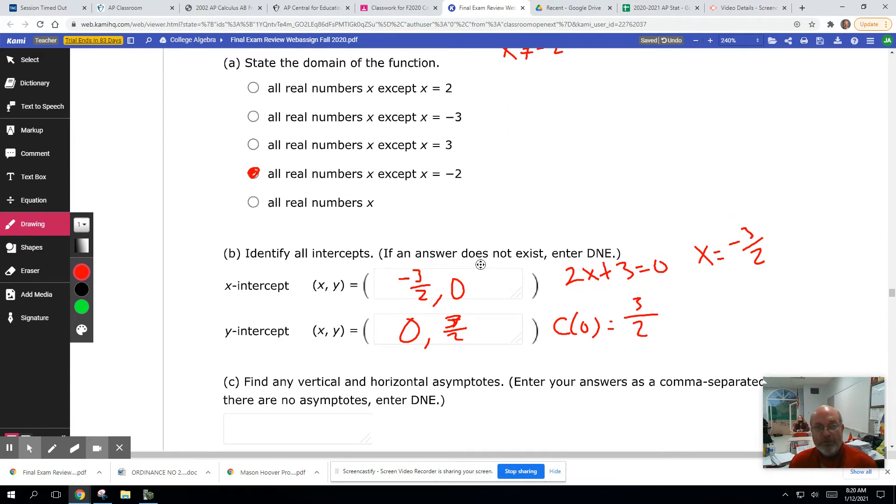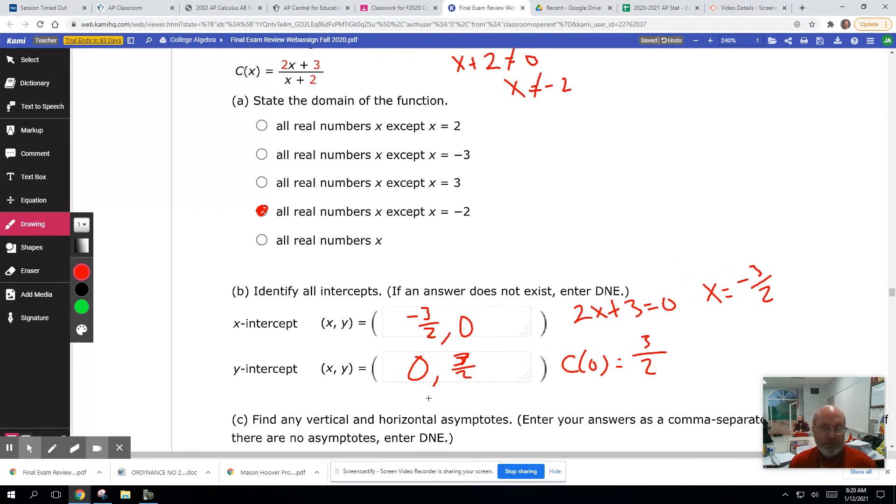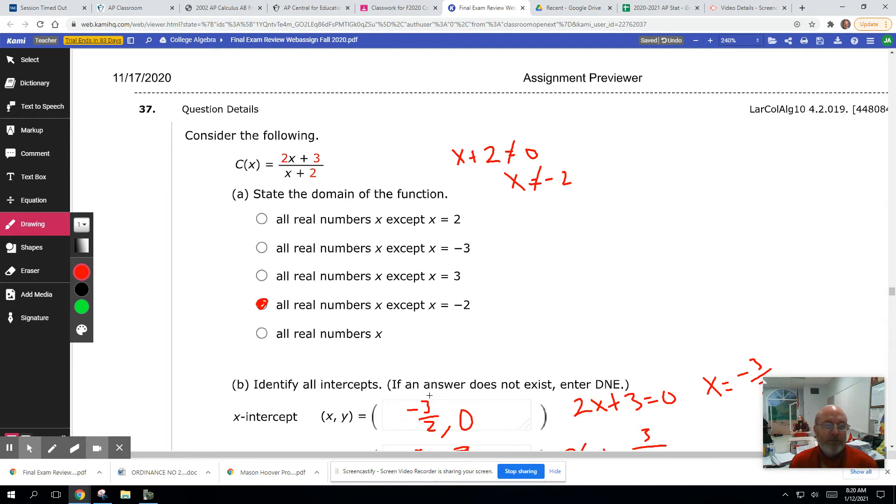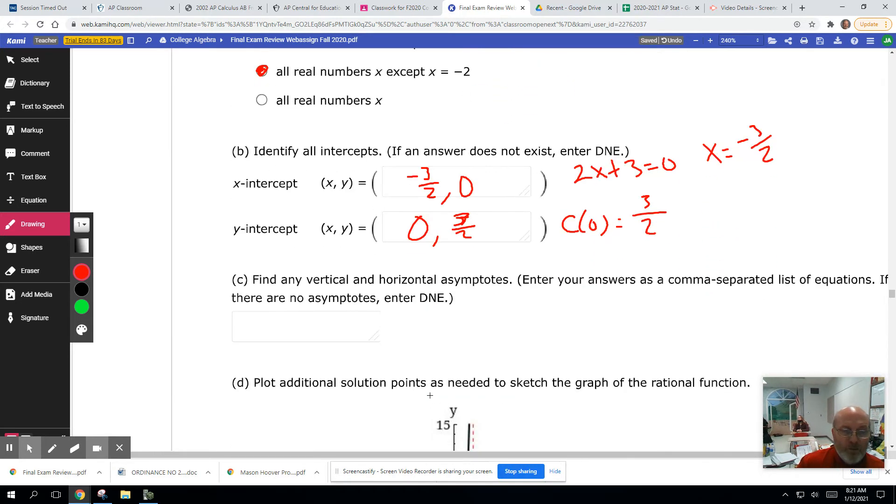Finding vertical and horizontal asymptotes. Horizontal asymptotes. Again, the degrees are both 1, numerator and denominator. So it's going to be leading coefficient over leading coefficient. Horizontal asymptote is going to be 2 over 1. That's y equals 2 over 1, or just 2.